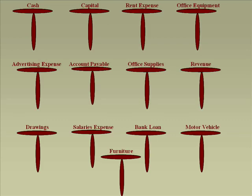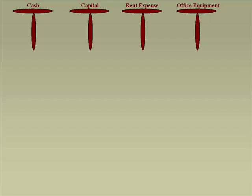Do it for each one of the T accounts you have in front of you. Stop this presentation, do this exercise, and when you're done, we'll restart. Here are the answers. Let's take the first group: cash, capital, rent expense, office equipment. Look at the plus minuses — it's coming now.